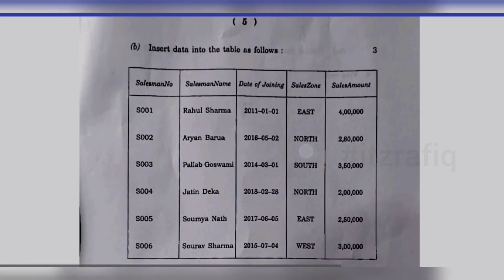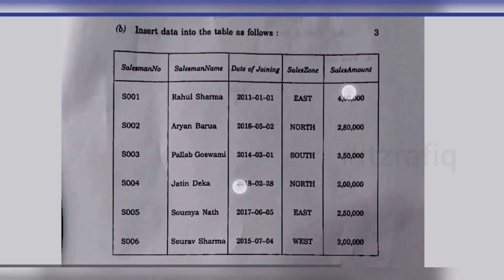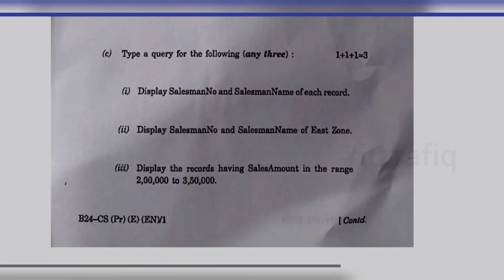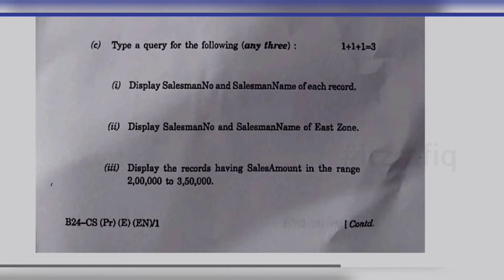The queries include: display the salesman number and salesman name of all records; display the salesman number and salesman name of the East Zone; and display the records having a sales amount in the range of 2 lakhs to 3 lakhs 50,000.